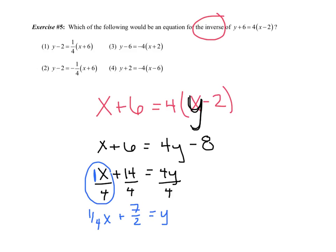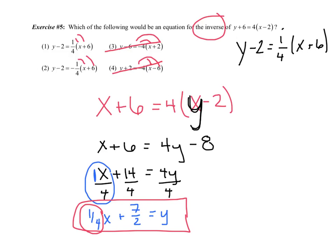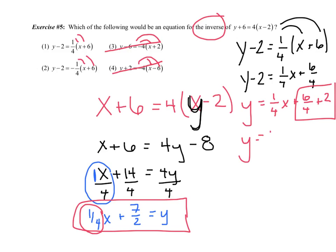None of those answers look like this, even though I know I have the right answer. Let's use common sense. Notice my slope is 1 fourth x. If I were to distribute this, would any give me a 1 fourth x? These two are out, those give negative 4x. This one gives positive 1 fourth x, this gives negative 1 fourth x. So I'll guess 1, but I'll work it off on the side to verify. Distributing 1 fourth: y minus 2 equals 1 fourth x plus 6 fourths. Add that 2 over: y equals 1 fourth x plus 7 halves, which is the same thing.